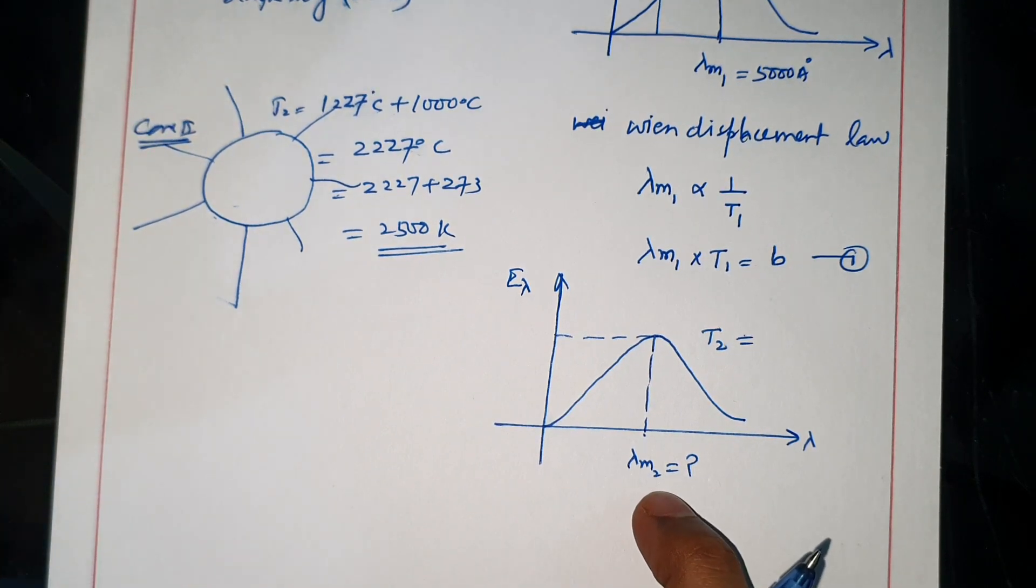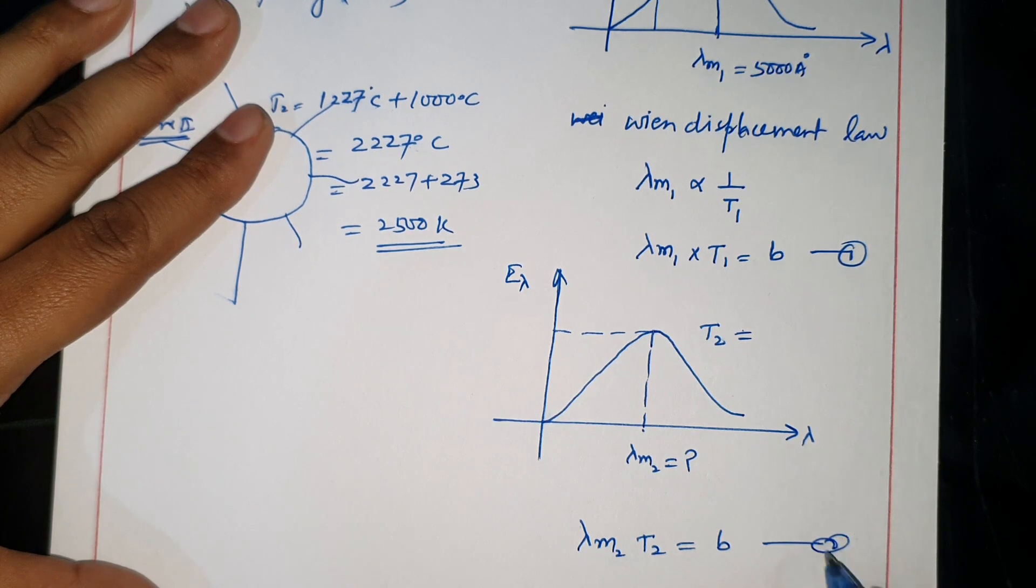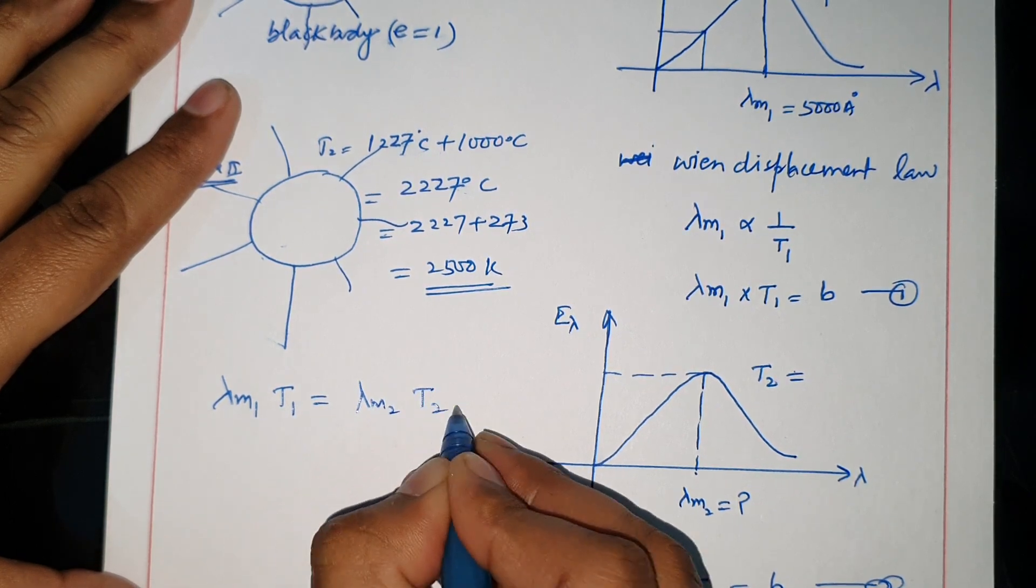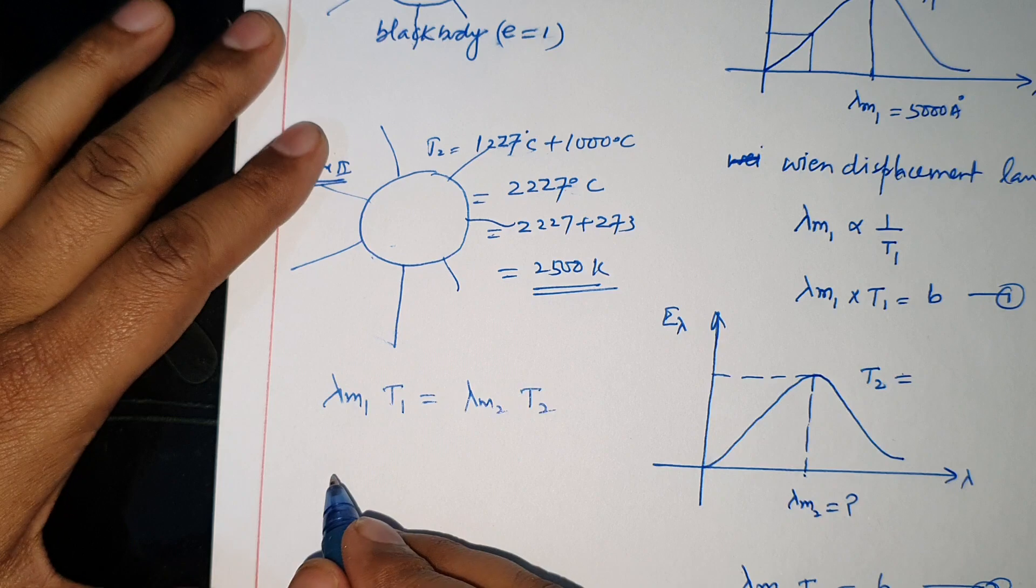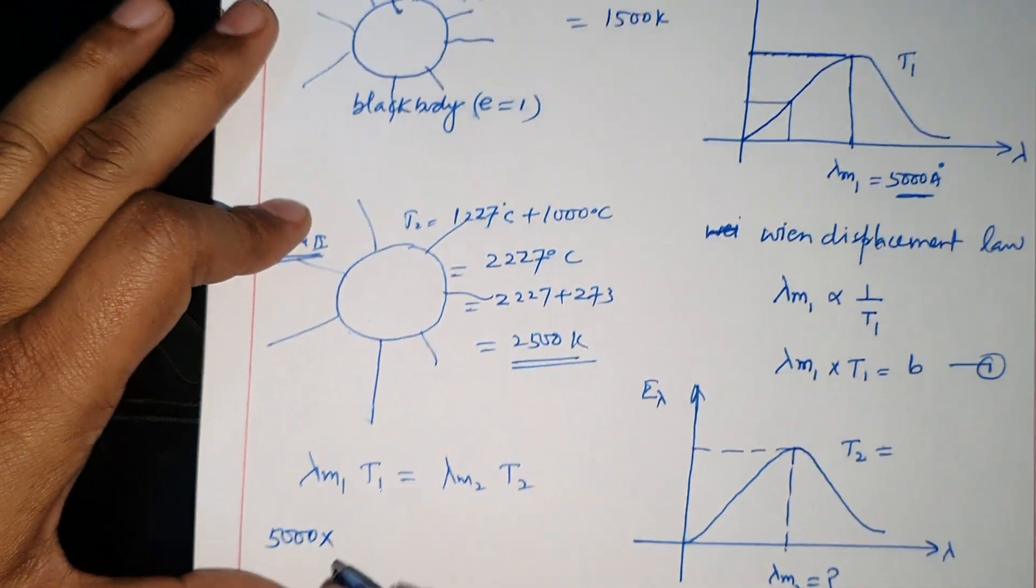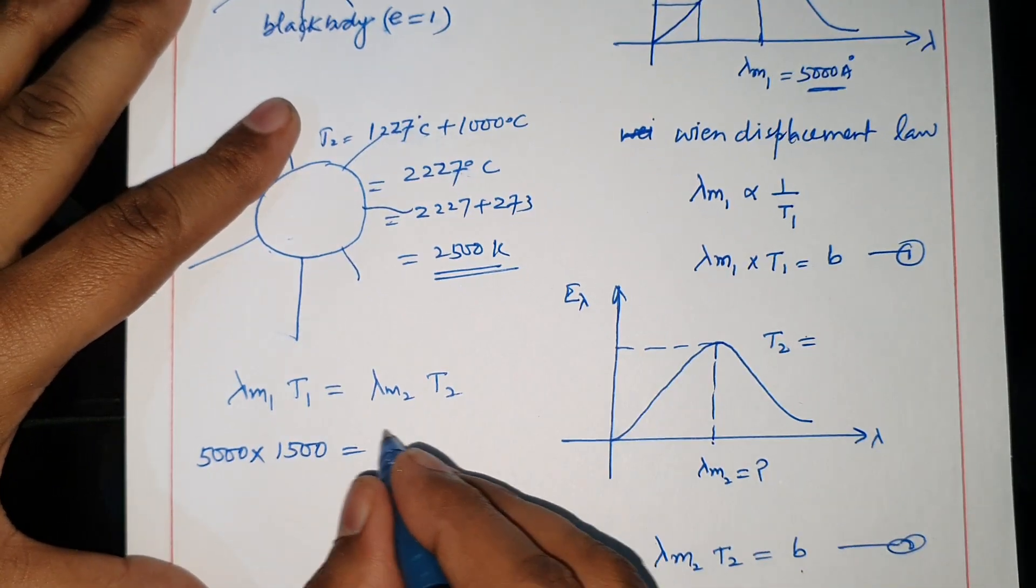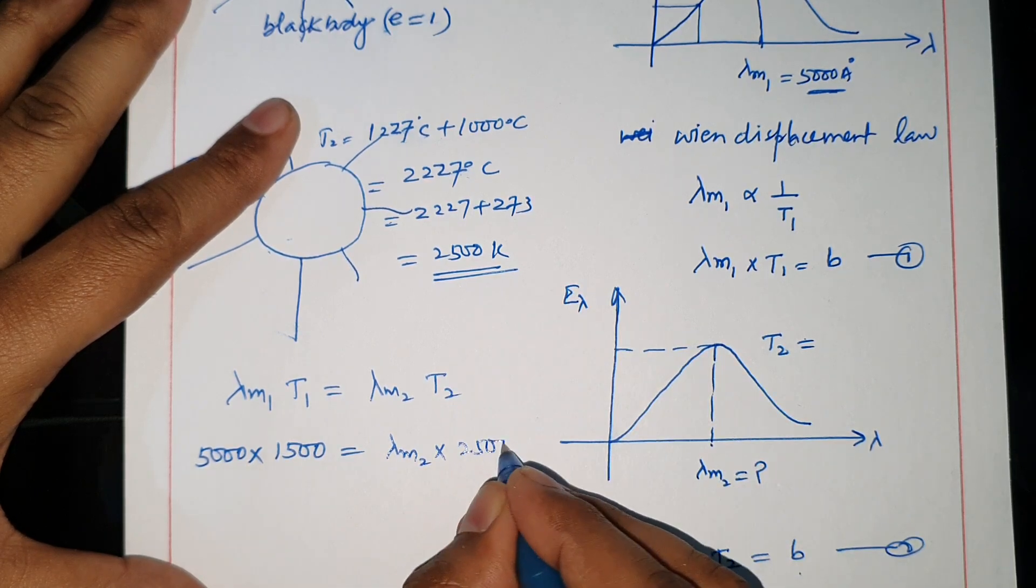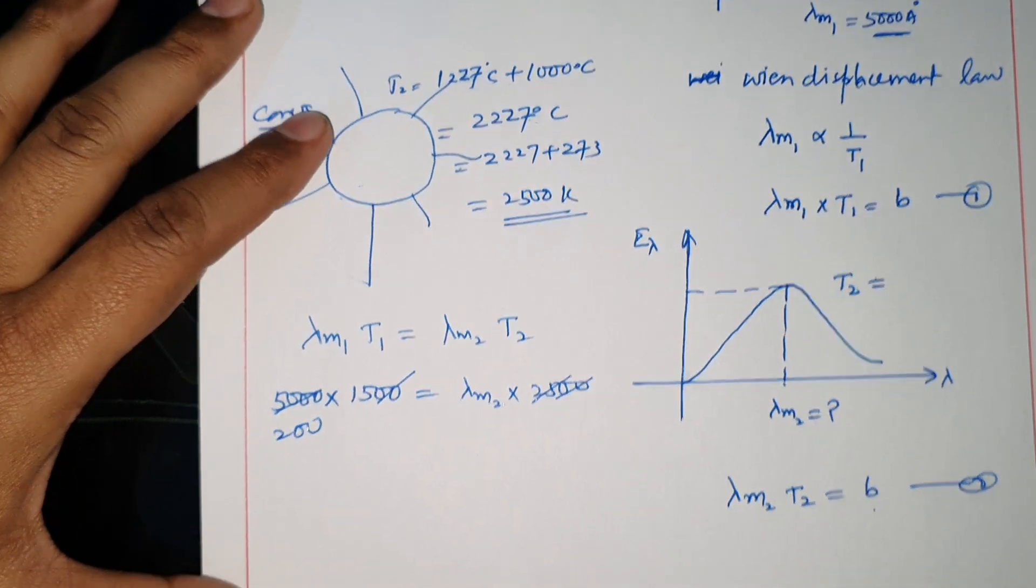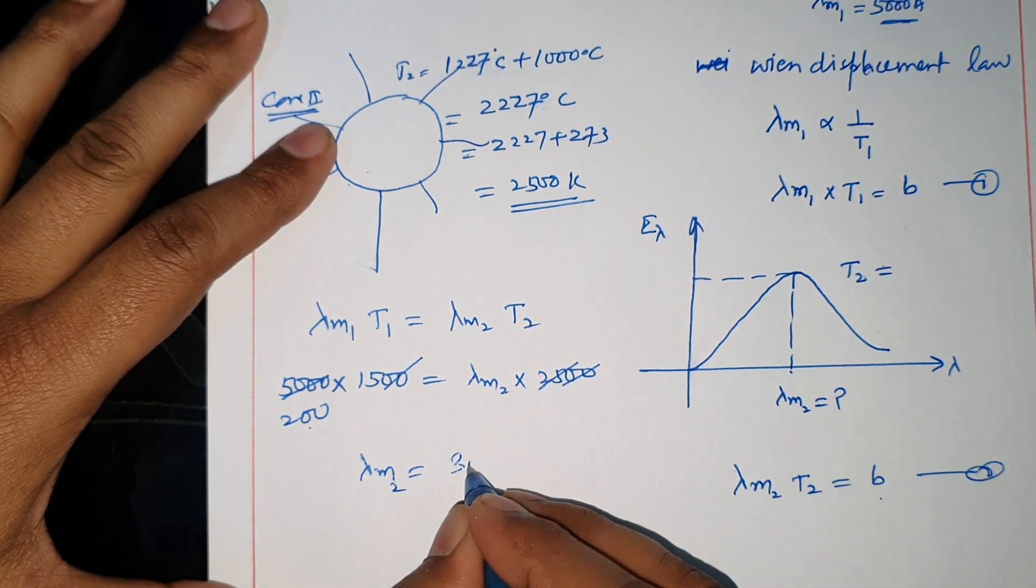Using Wien's displacement law: lambda M2 times T2 equals constant, which equals lambda M1 times T1. Therefore, lambda M2 equals lambda M1 times T1 divided by T2. Substituting values: lambda M2 equals 5000 times 1500 divided by 2500, which equals 3000 Angstrom.